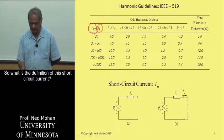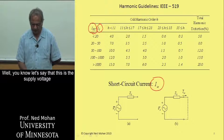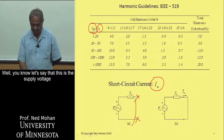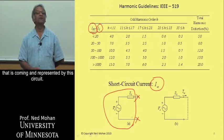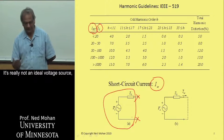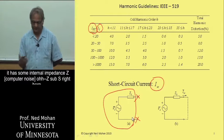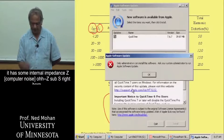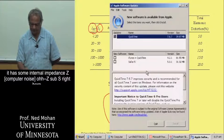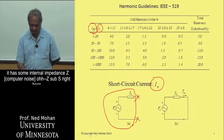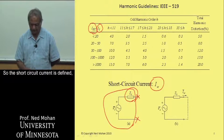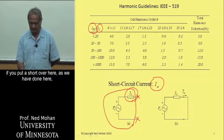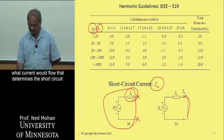So what is the definition of this short circuit current? Well, let's say that this supply voltage that is coming can be represented by this circuit. It's really not an ideal voltage source. It has some internal impedance, Z sub S right here. So the short circuit current is defined if you put a short over here, as we have done here, what current would flow that determines the short circuit current in this source.